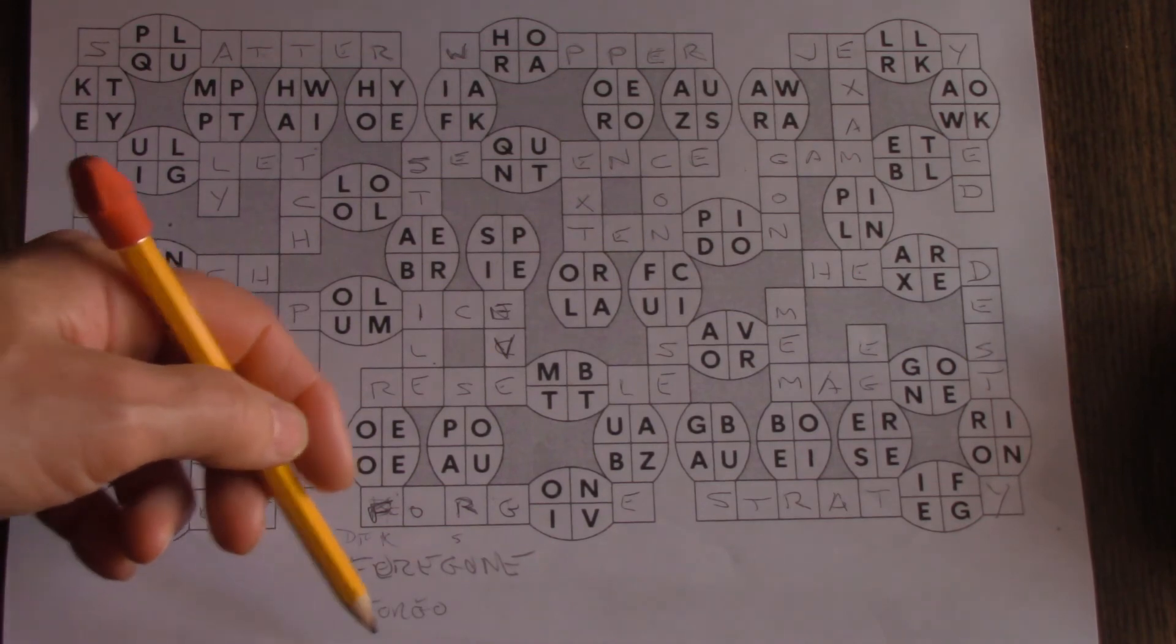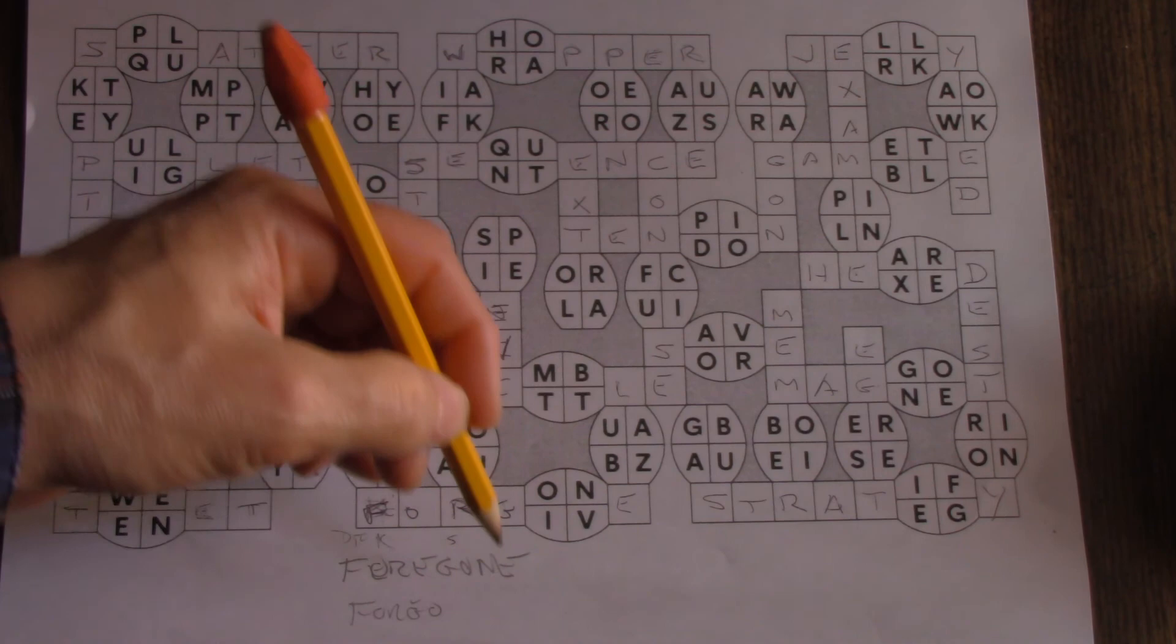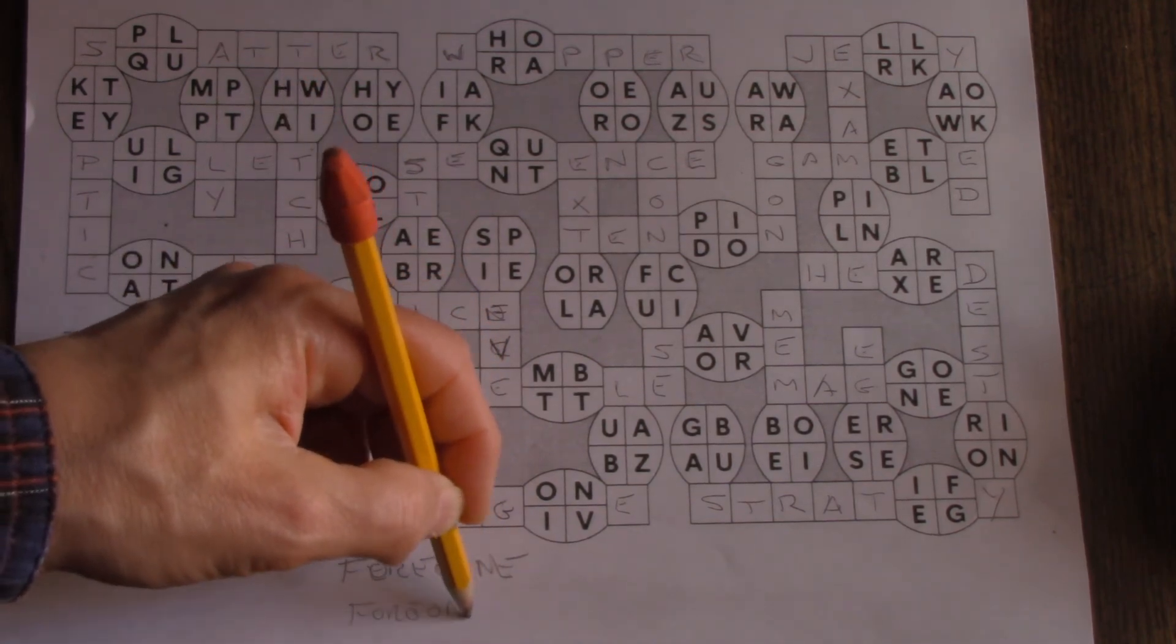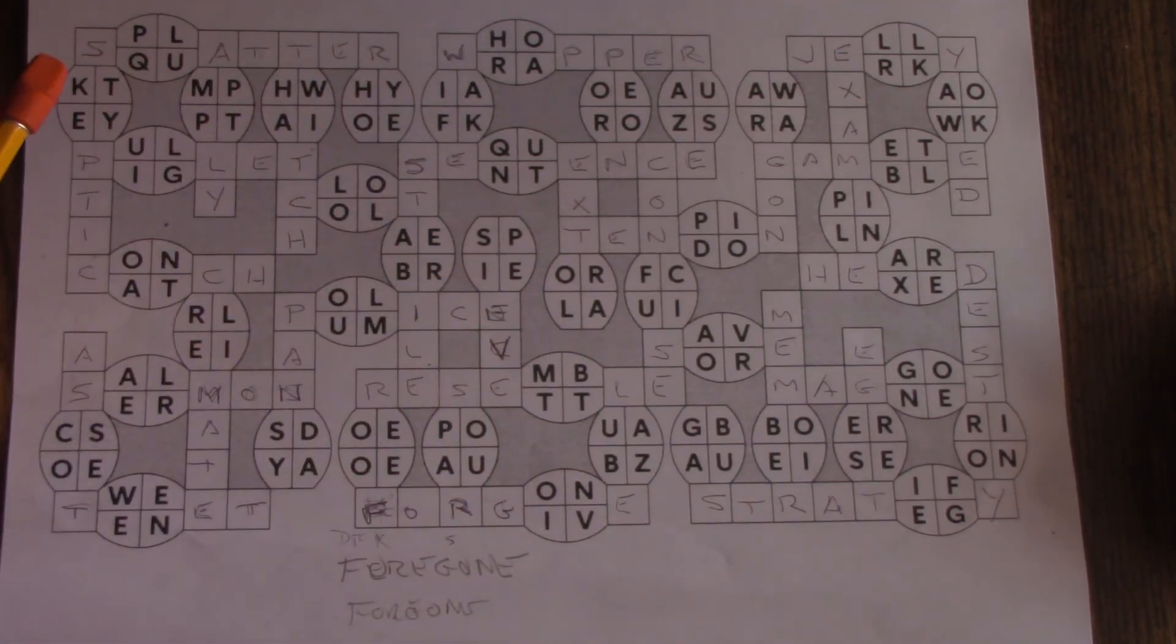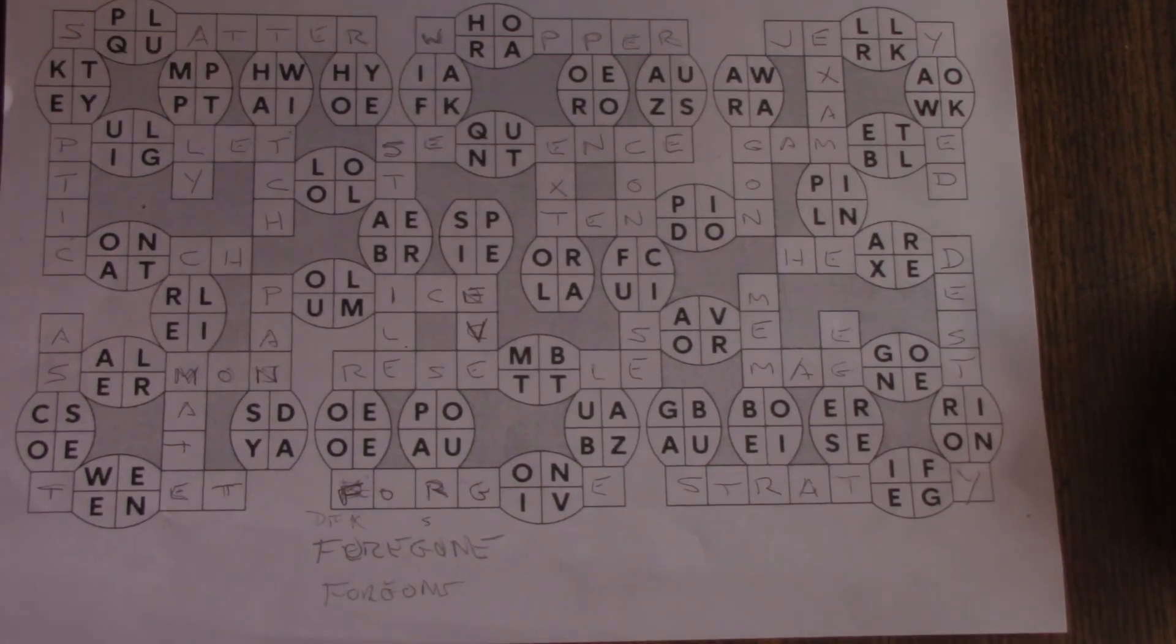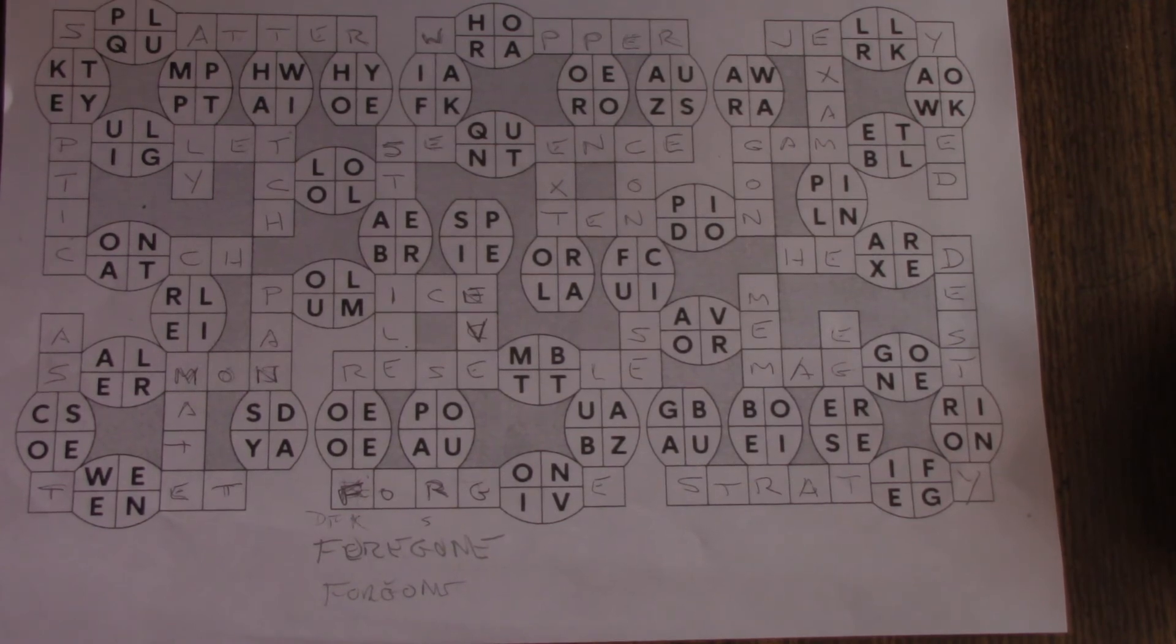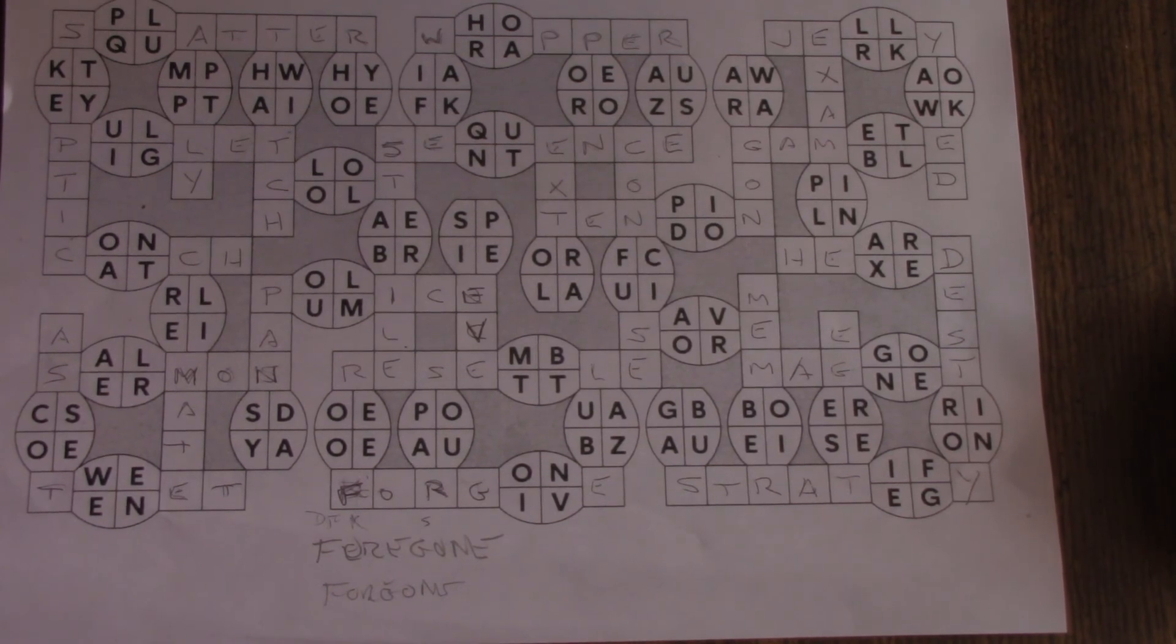So I don't know that the past participle of forego is foregone without an E. At least, that's not my understanding of the English language. But I might be wrong, and if I am, please feel free to correct me in the comments below.